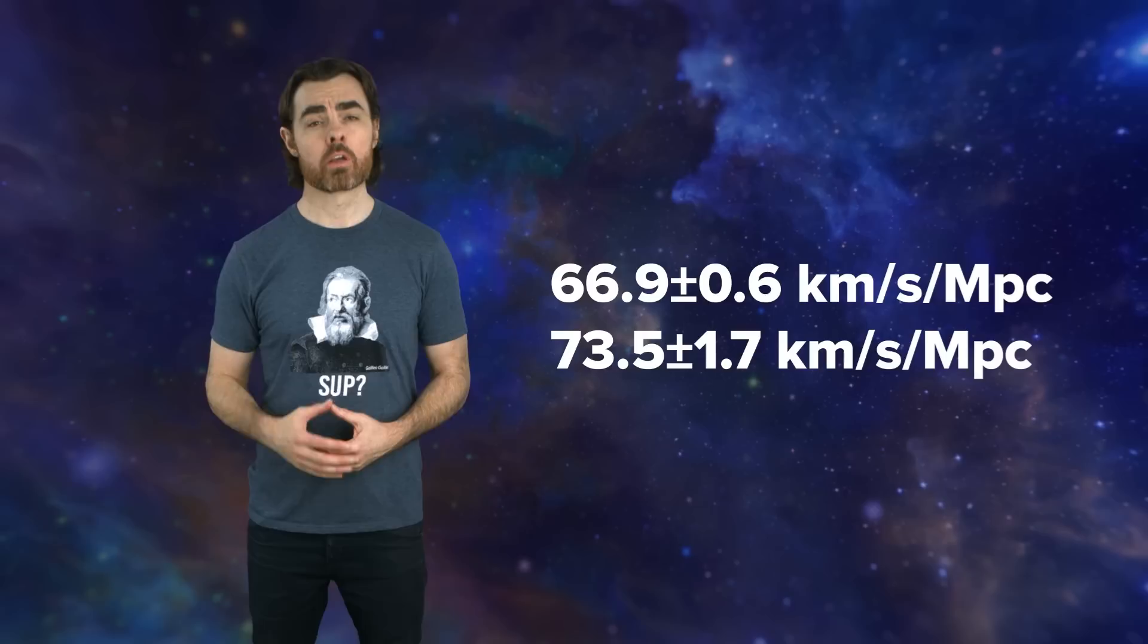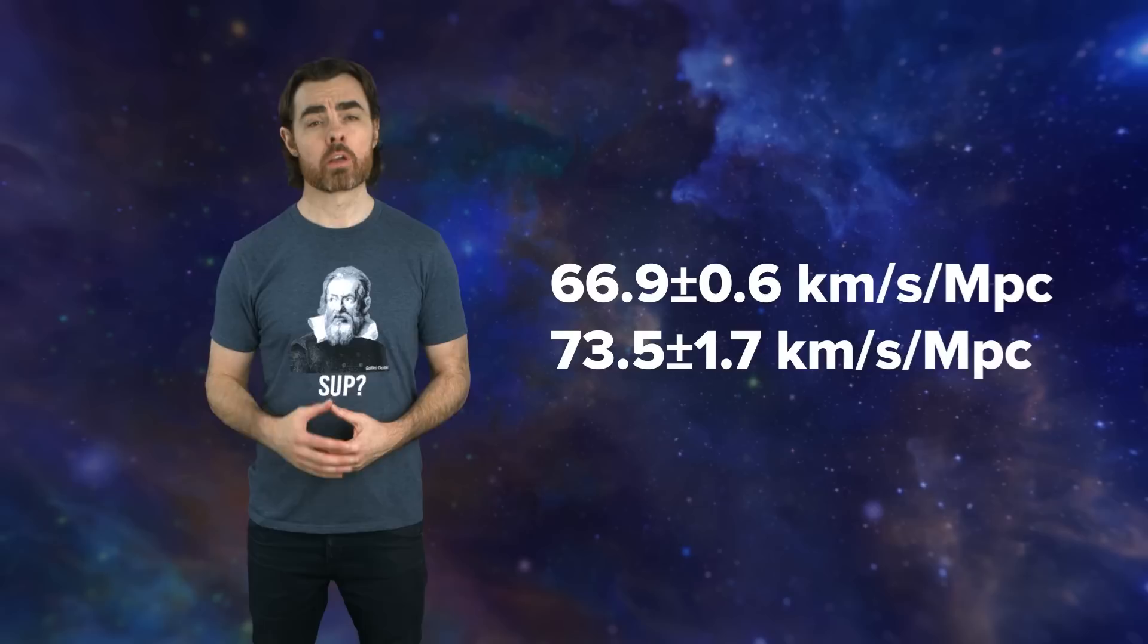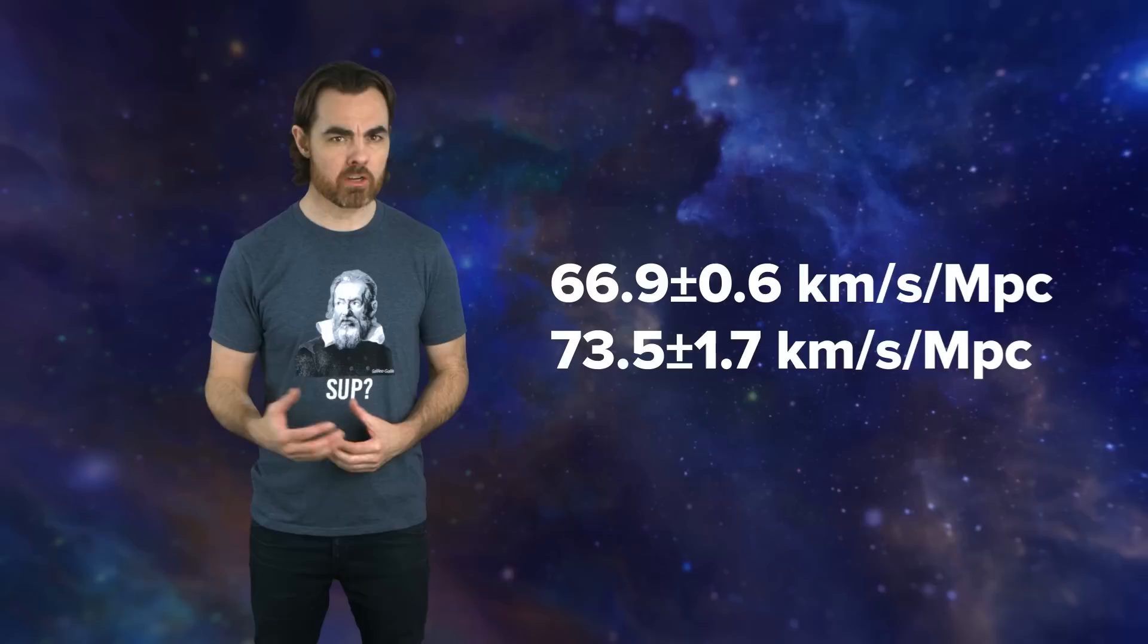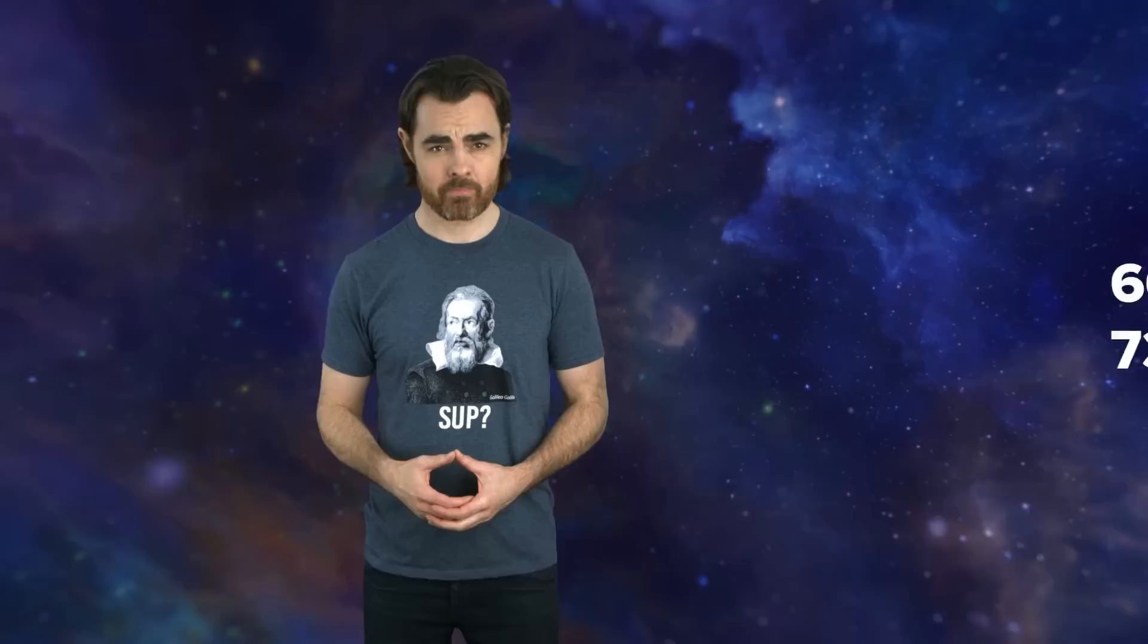But they also seem irreconcilably different. 3.7 sigma difference, in fact, which means a 1 in 7,000 chance that that level of difference could have happened through random errors. This is the crisis in cosmology.